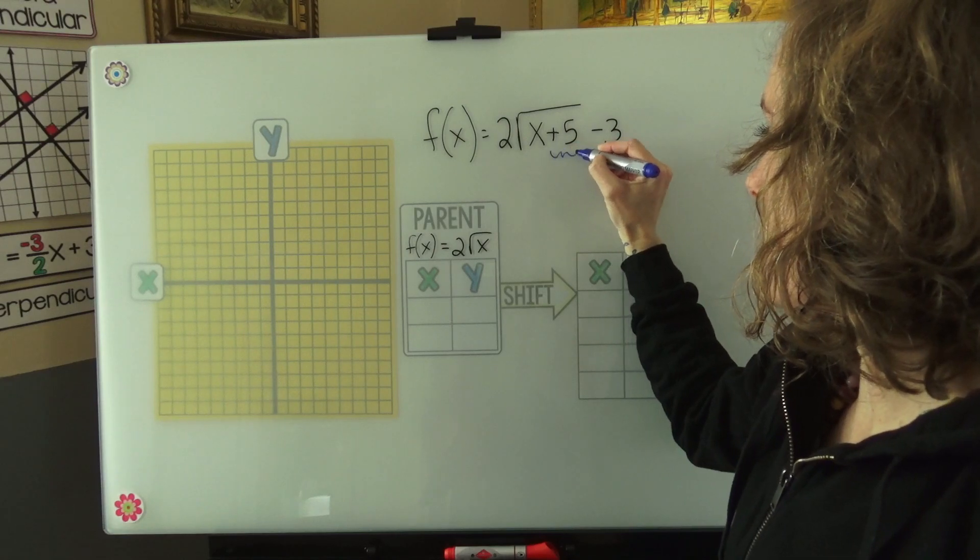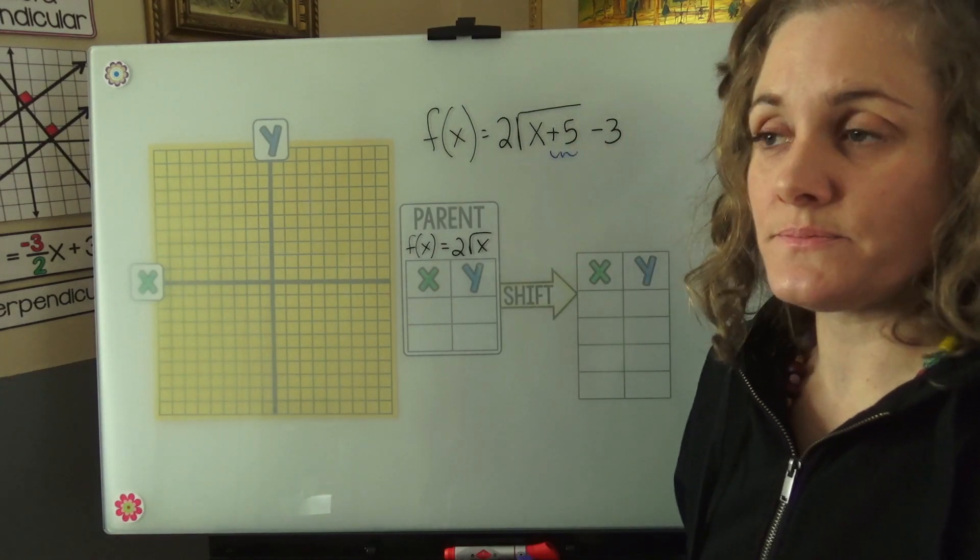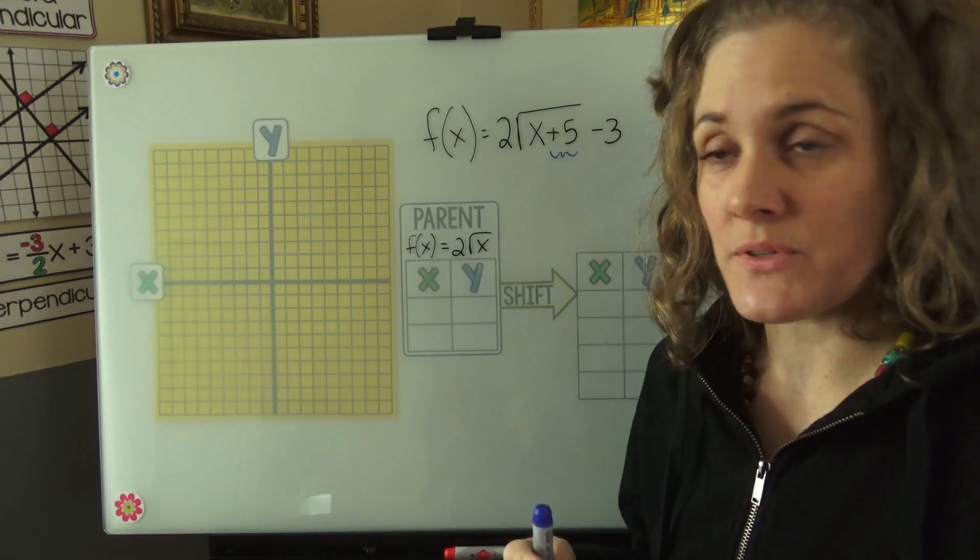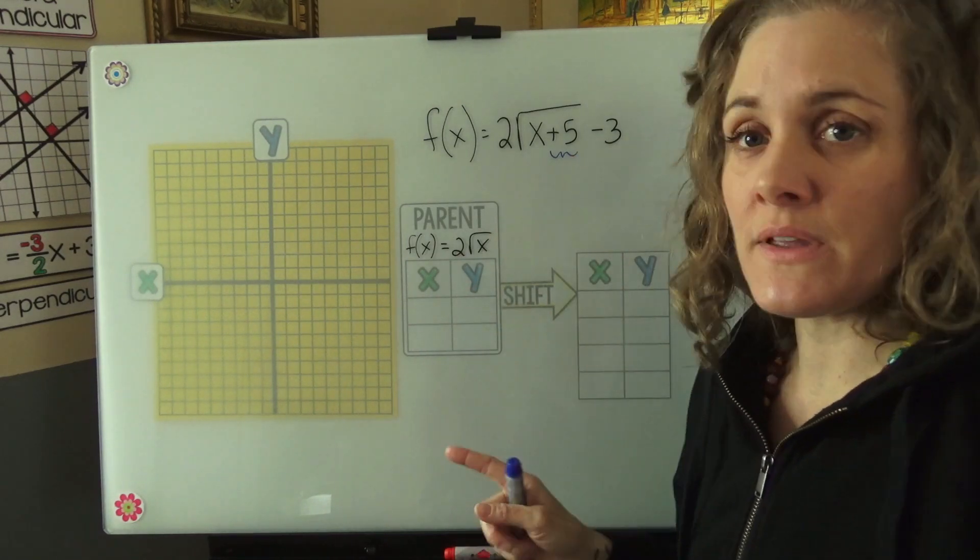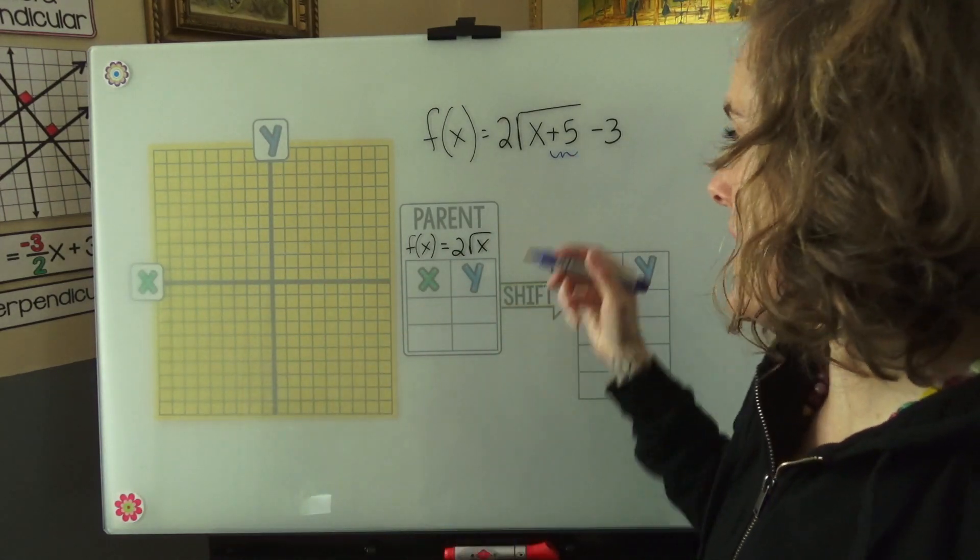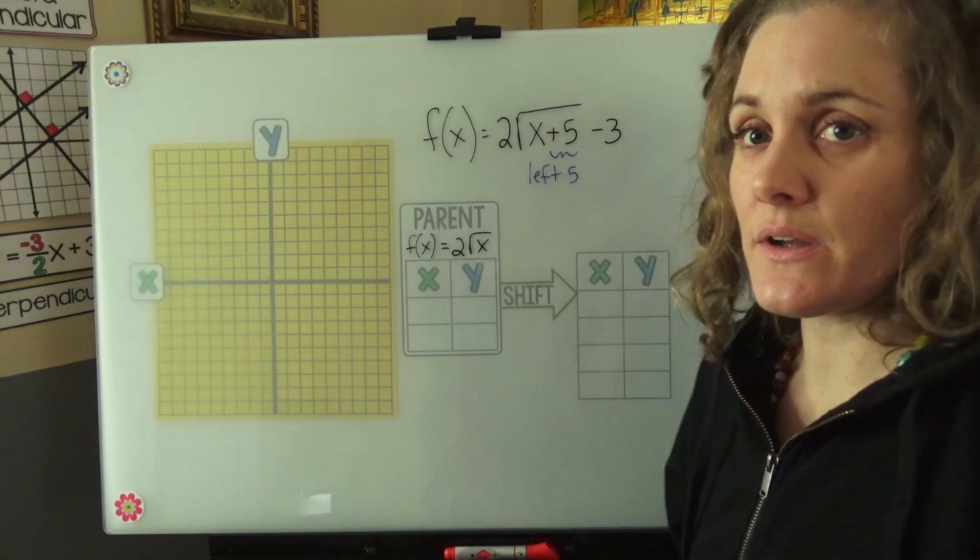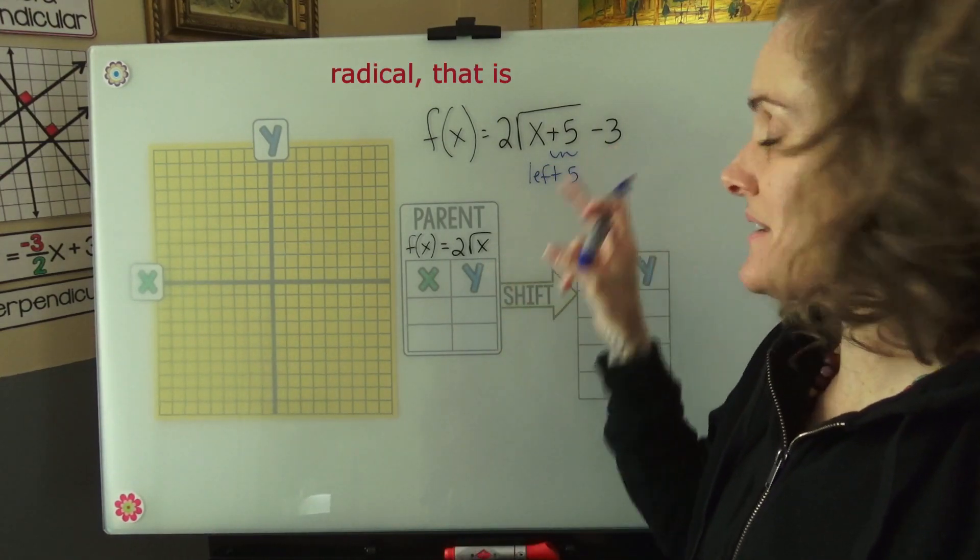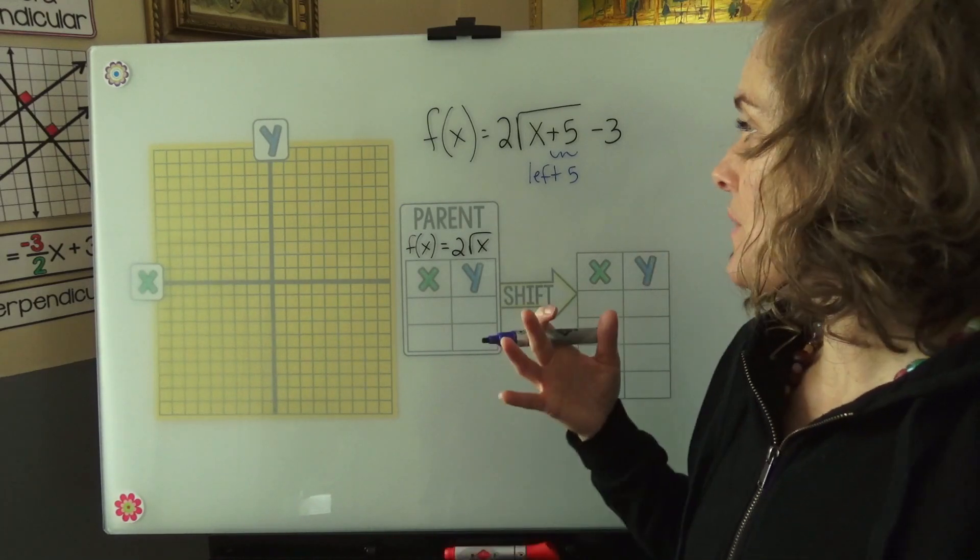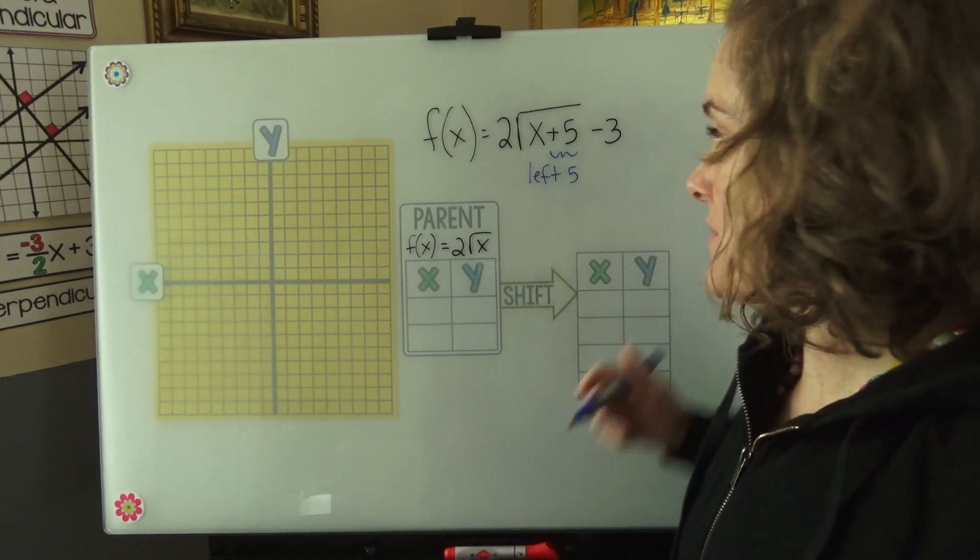So we have a plus 5, and we know that inside is always opposite, so that plus 5 means we're going to be going left 5, so minus 5. And outside of the bracket, the negative 3, we know that that's just going to shift down, down 3.